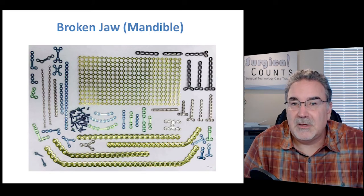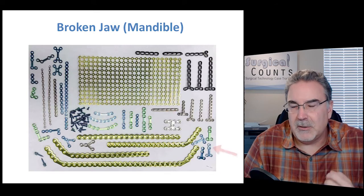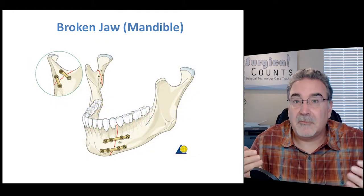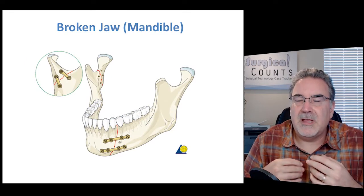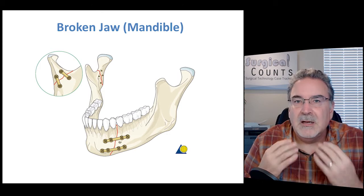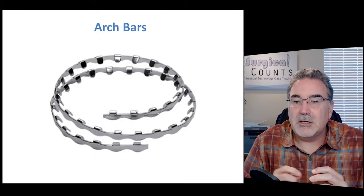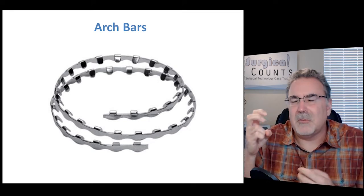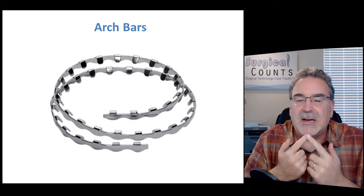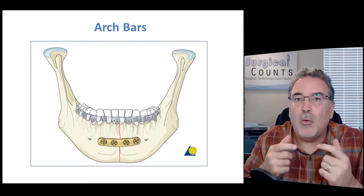Notice these plates come in all different shapes — L shapes, Y shapes, X shapes, H shapes, and T-shaped plates. The doctor will sometimes ask for different plates that look like these different letters. Once the fracture is reduced and fixed with plates, we don't want the patient using their mouth and jaw. So we fix the jaw in place using arch bars — a little strip of metal with small hooks. We cut arch bars to the right length, extend them across the teeth, and use wire wrapped around each tooth and around the arch bar, twisted into place to hold it on the teeth.